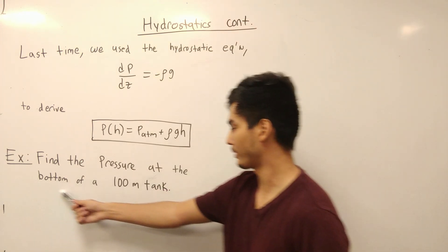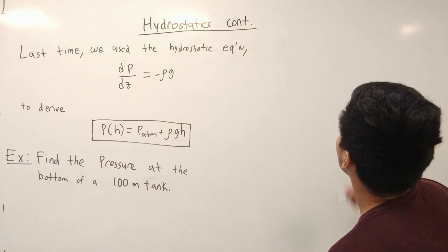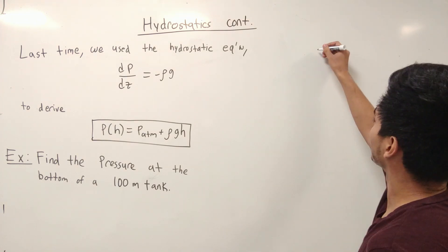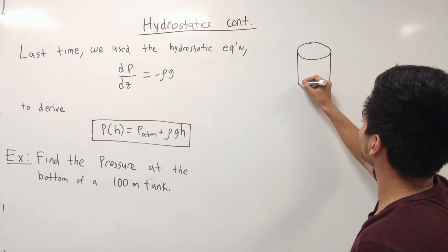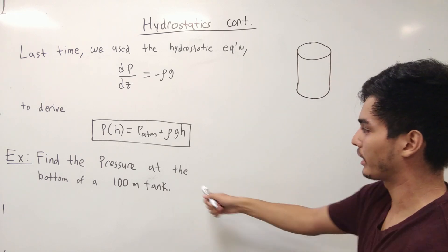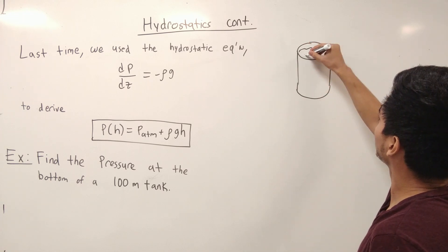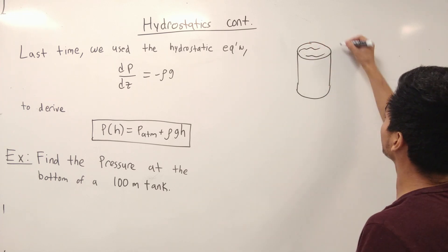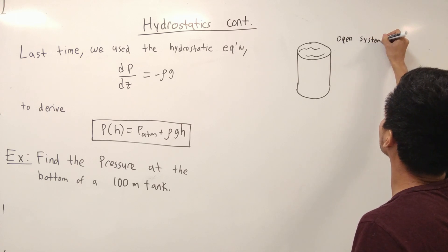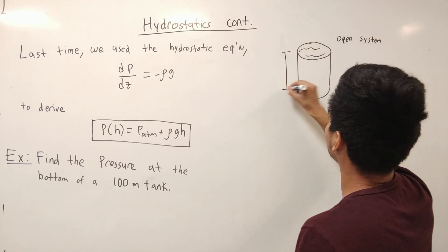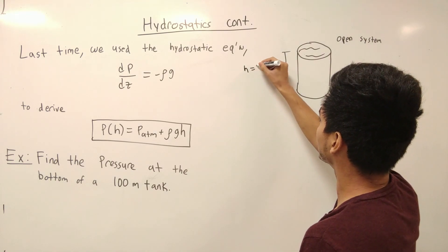Today we're going to do an example where we find the pressure at the bottom of a 100-meter tank. So we can start by drawing the system — I love drawing the system — pretty much the same thing we had last time. This time we have the value for H. We have a tank, fluid on top, and we're going to assume it's an open system. Here we draw the height of the tank, which is going to be 100 meters.